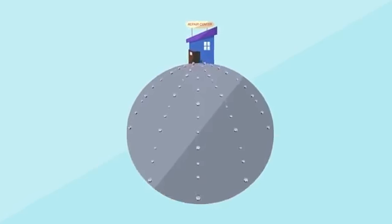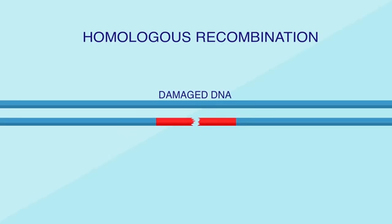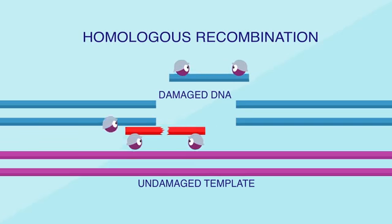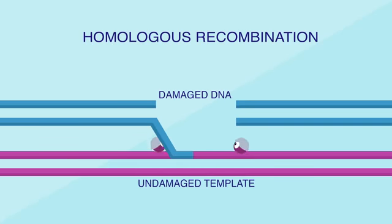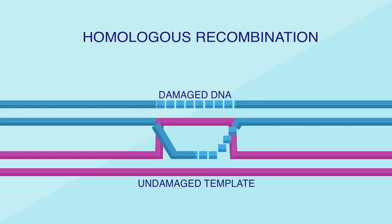The enzyme catches most of these right away, and cuts off a few nucleotides and replaces them with the correct ones. And just in case it missed a few, a second set of proteins comes behind it to check. If they find a mismatch, they cut out the incorrect nucleotide and replace it. This is called mismatch repair. Together, these two systems reduce the number of base mismatch errors to about one in one billion.